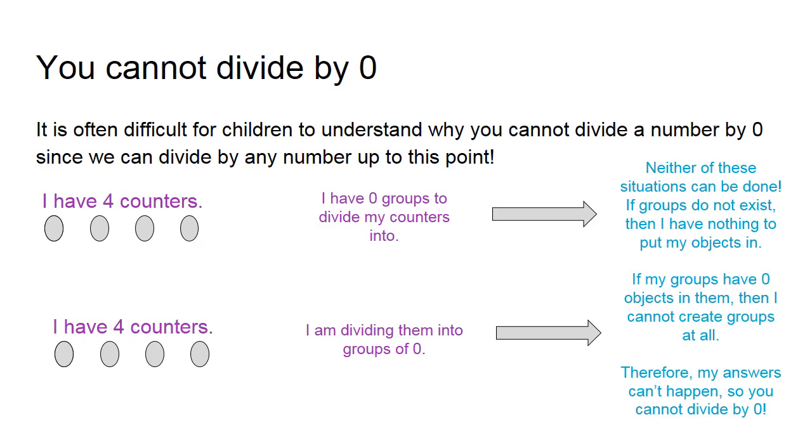So let's say I have four counters, and I want to divide them into zero groups. Well, I have zero groups, nothing exists in that space, so let me try a different way of thinking of it. I have four counters, and I'm going to divide them into groups of zero. Well, that means that I'm not circling any counters. I have nothing in a group, so I can't do either of these situations.